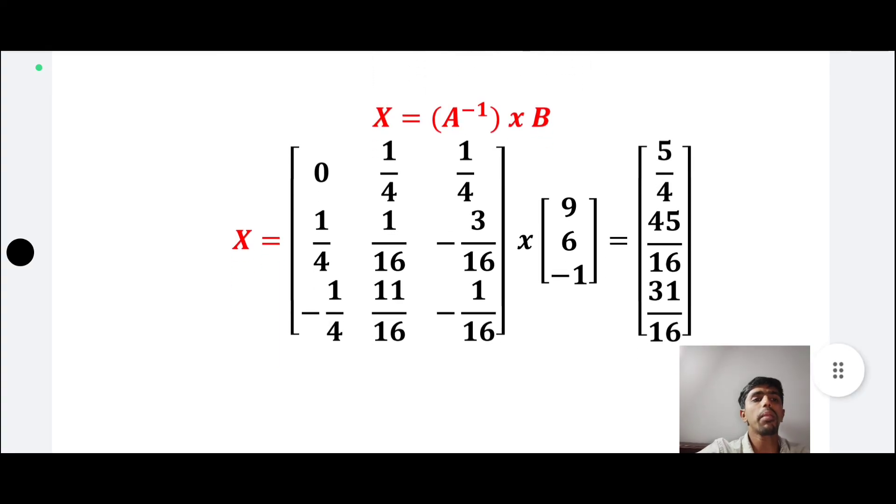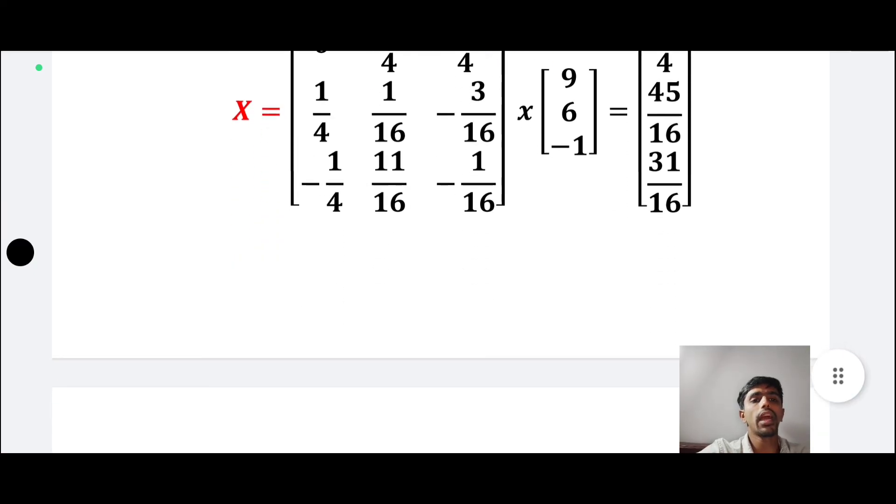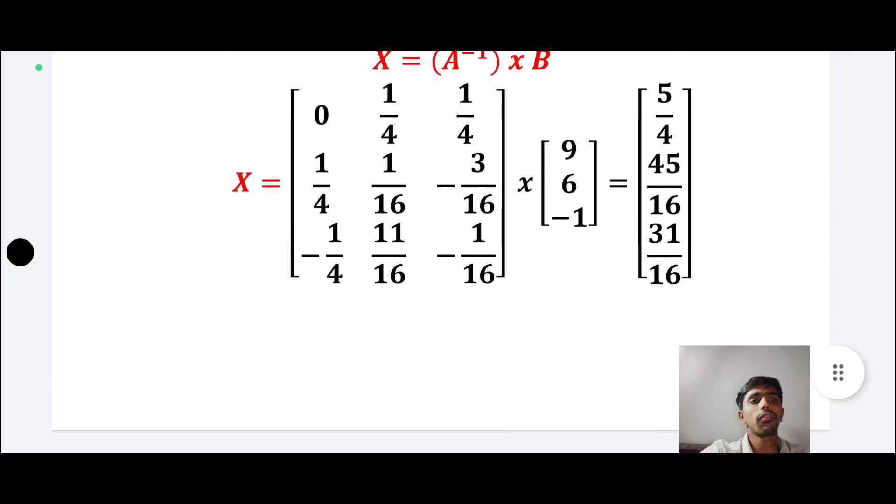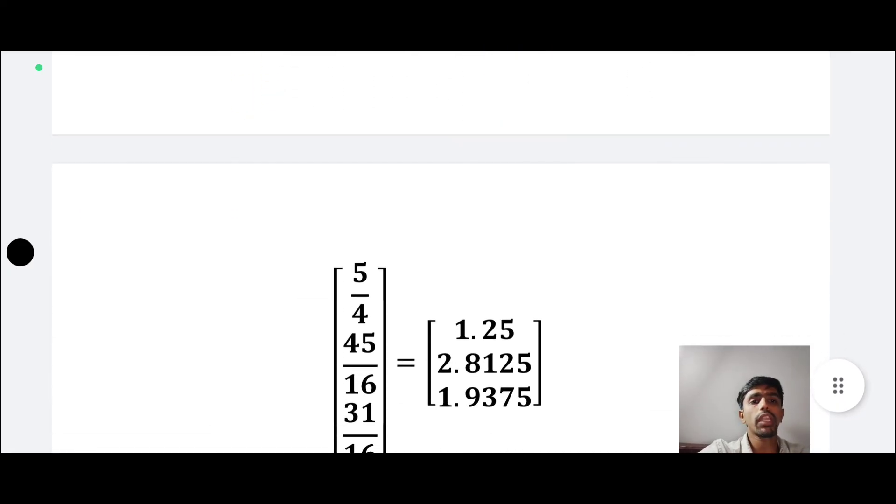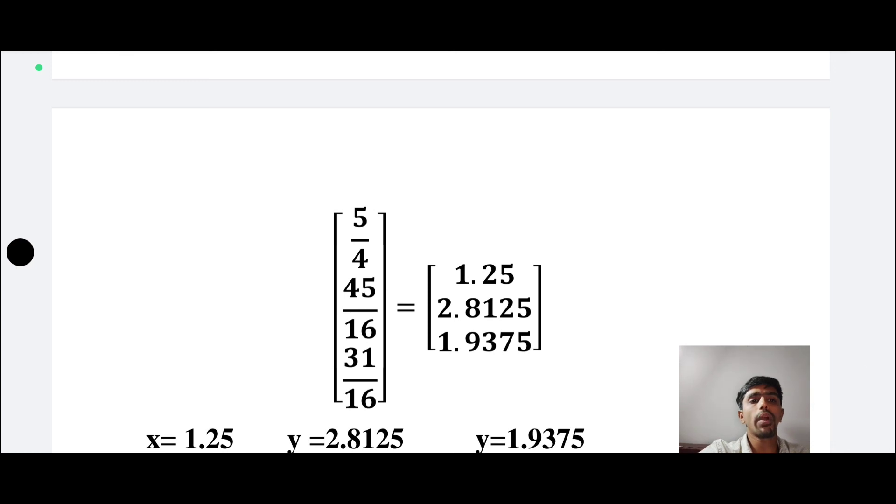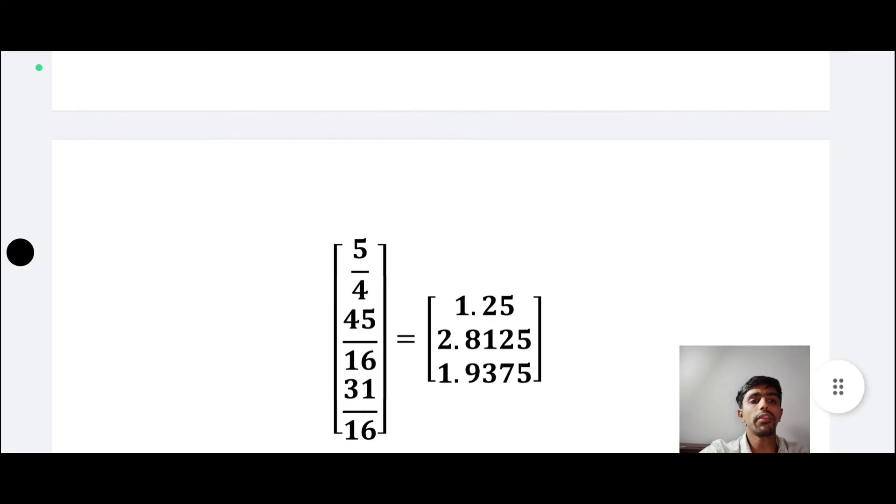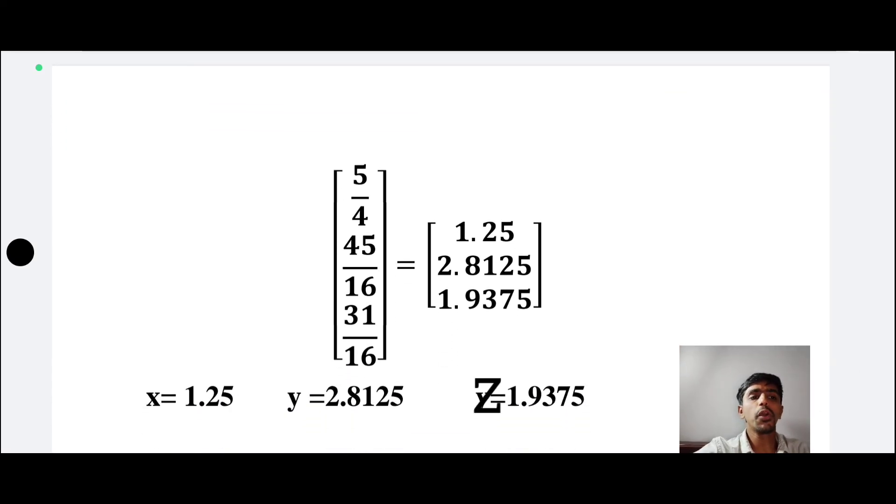The matrix is 5 by 4, 45 by 16, 31 by 16, which equals 1.25, 2.8125, 1.9375. X is equal to 1.25, Y is equal to 2.8125, Z is equal to 1.9375. Okay, thank you.